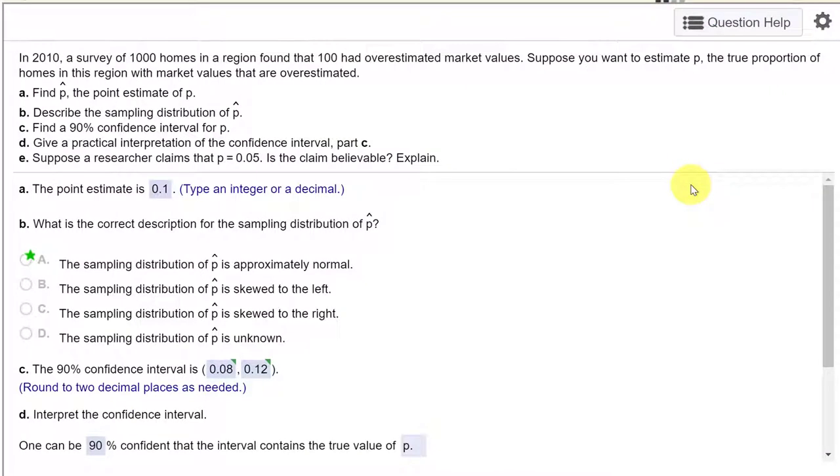Hi, this is Dr. Don. I have a problem out of McClay chapter 6 section 4 about confidence intervals for a proportion.